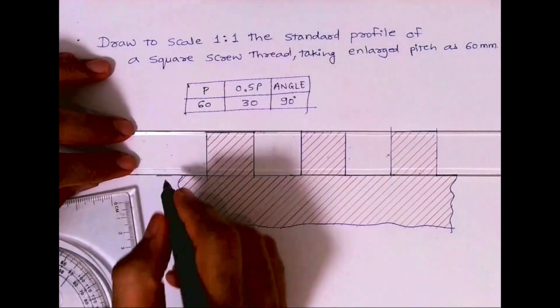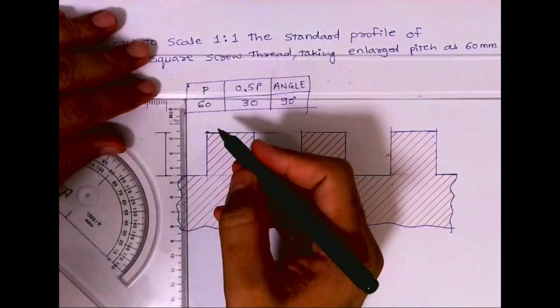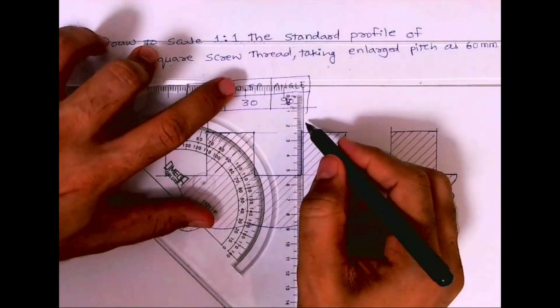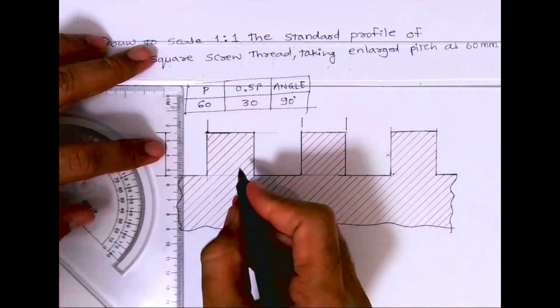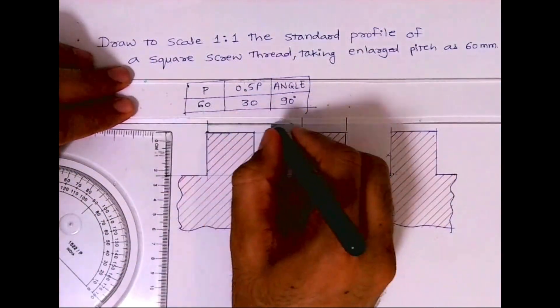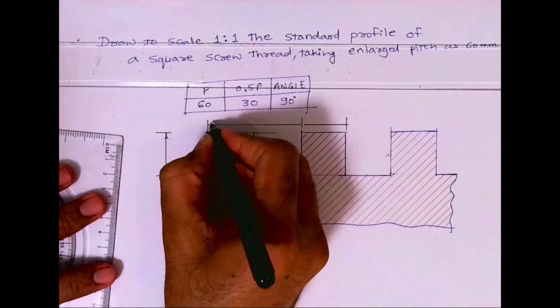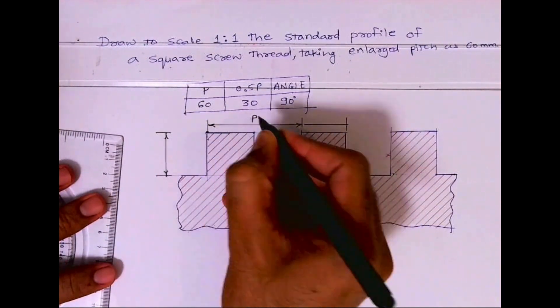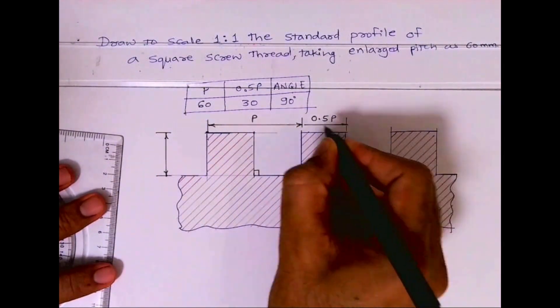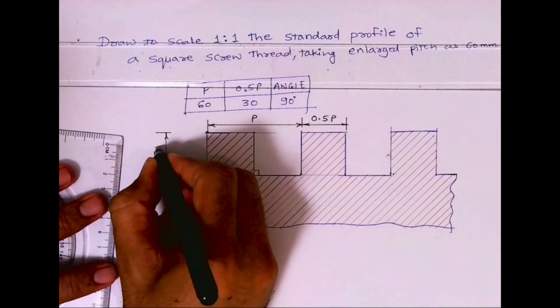Now we need to mark the height. This is 0.5p and this is p. This is 90 degrees, so you can do dimensioning. I hope you have understood how to draw this square screw thread.